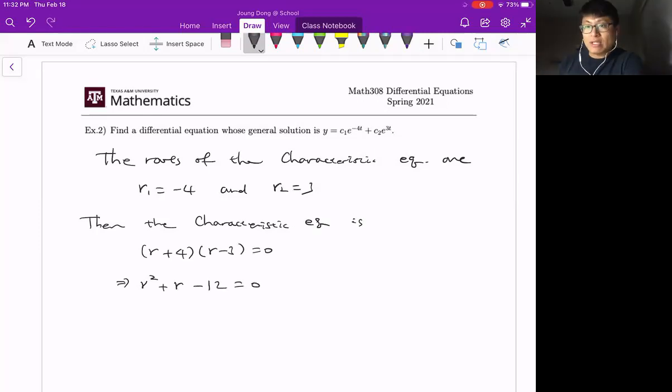And as we practiced before, we can write the differential equation with constant coefficient homogeneous equation from this characteristic equation. So your differential equation is y double prime plus y prime minus 12y equals 0. That's it.